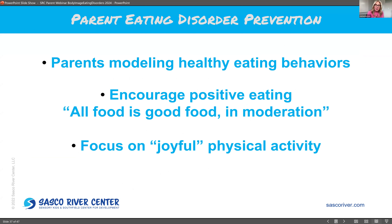What can parents do to prevent eating disorders? Brenna gave lots of excellent examples — parents modeling healthy body image as well as healthy eating behaviors. That means being non-restrictive in your eating, eating all types of food, not limiting carbs or fat, having a balanced diet. Encourage positive eating — the idea that all food is good food in moderation. And as mentioned before, focus on joyful physical activity, not working out just for the purpose of influencing weight and shape.